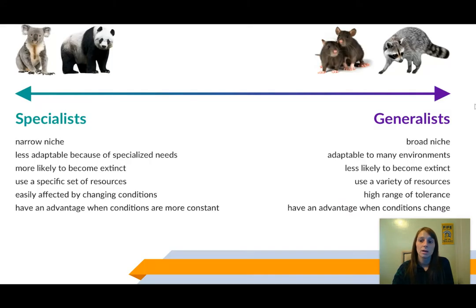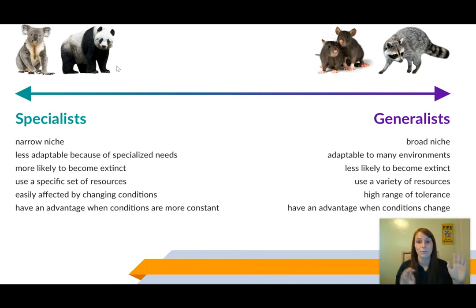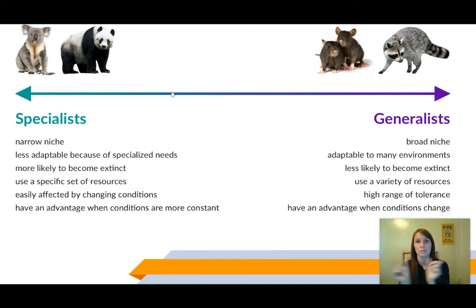We have this diagram here that shows what I talked about in a bit more detail. One thing I want you to be aware of is that while we categorize animals as specialists versus generalists, it is a spectrum. I'm giving you the very specific examples on both sides; however, you do have organisms that fall somewhere in between. We do still tend to lump them into either of these two categories.